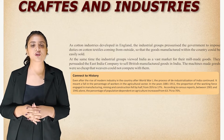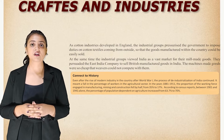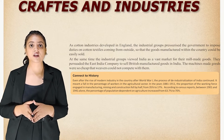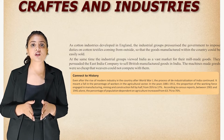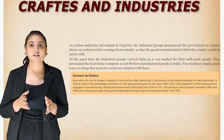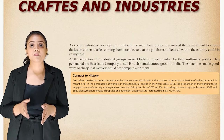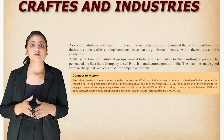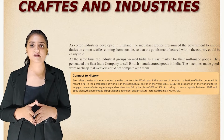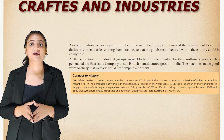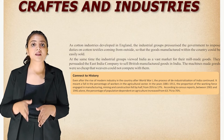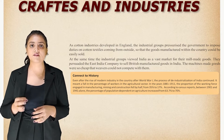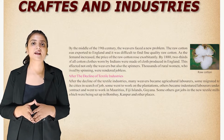Even after the rise of modern industry in the country after World War One, the process of de-industrialization of India continued. In the years 1881 to 1911, the proportion of the working force engaged in manufacturing, mining, and construction fell by half — from 35 percent to 17 percent. According to the census report, between 1901 to 1941 alone, the percentage of population dependent on agriculture increased from 63.7 percent to 70 percent.